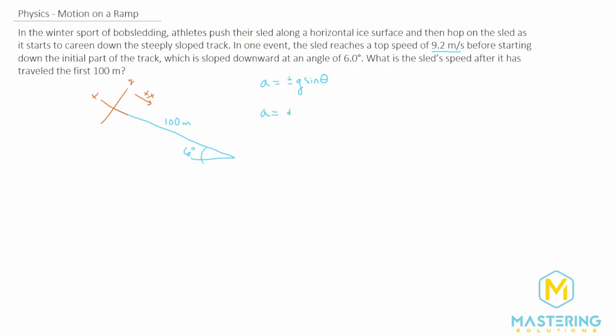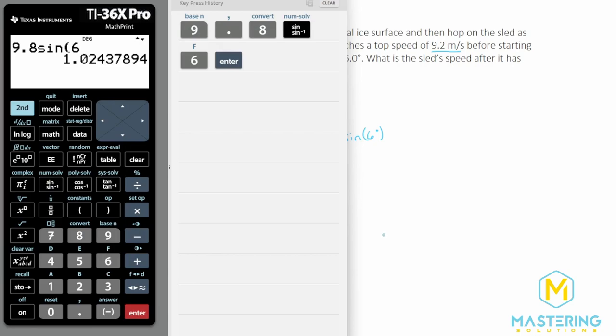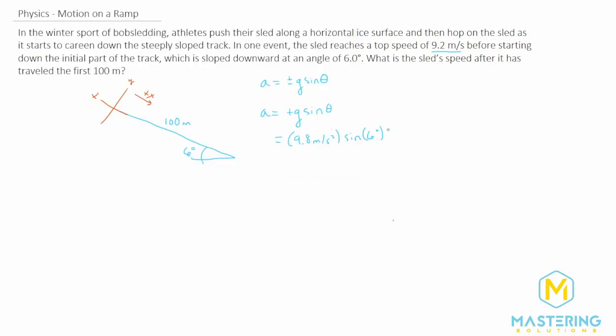So acceleration equals positive g times sine of theta. Plugging in our values, we have 9.8 meters per second squared times sine of 6 degrees. The acceleration is 9.8 times sine of 6, which gives us 1.02 meters per second squared as the bobsled goes down the inclined plane.